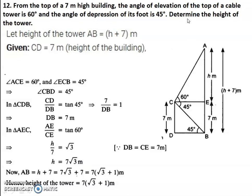Now, our question asks us to determine the height of the tower. The height of the tower is H plus 7 meters. H is 7 root 3, so the height equals 7 root 3 plus 7. Taking 7 as common, the height of the tower equals 7 into (root 3 plus 1) meters.